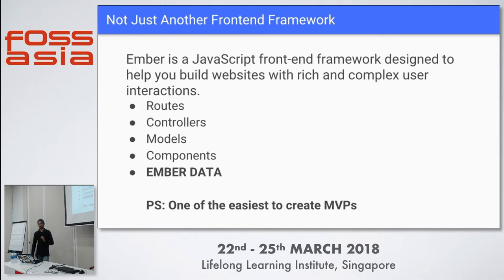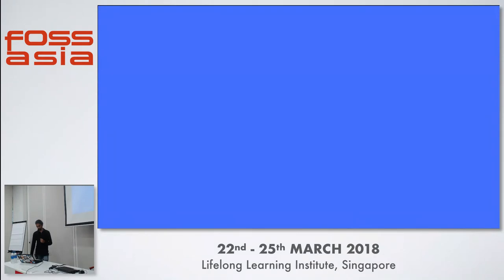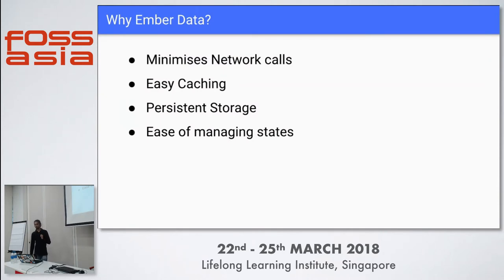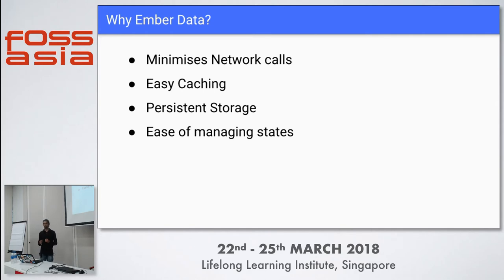So how do we handle data in Open Event front end? The answer is Ember Data. It lets us minimize API calls — in a typical application you'd write an Ajax call for every network call in different components, leading to redundant code. Ember Data also provides easy caching: when we fetch data, it stores it locally in a store, providing persistent storage and making state management very easy.